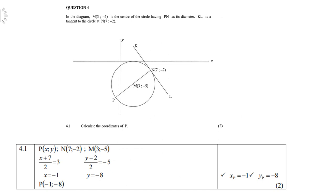The first question is calculate the coordinates of P. Now take note, P is on the diameter PN, and that means M is the center of PN. So you allocate coordinates X and Y to P. M will be (3, -5) and N will be (7, -2). We're using a midpoint formula where we split X and Y. So X plus 7 divided by 2 gives you 3, and Y minus 2 over 2 gives you minus 5. Therefore, if you cross multiply, X is negative 1 and Y is negative 8. So the coordinates of P is (-1, -8).